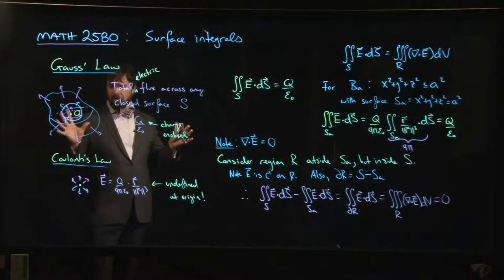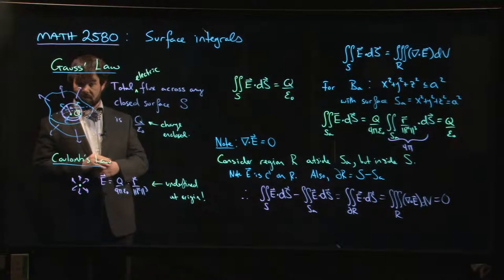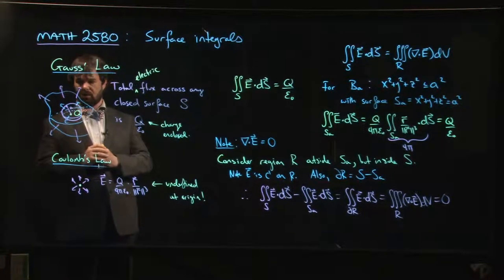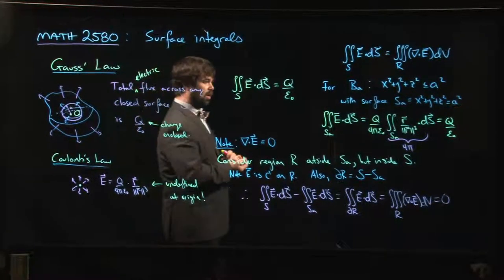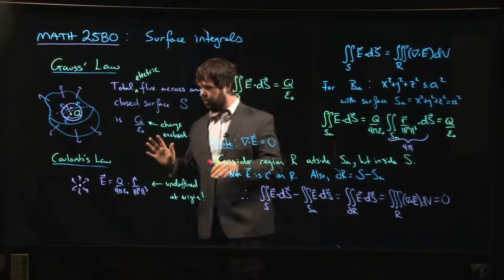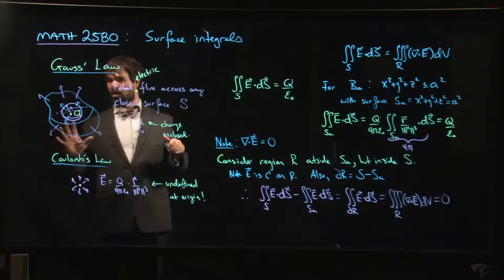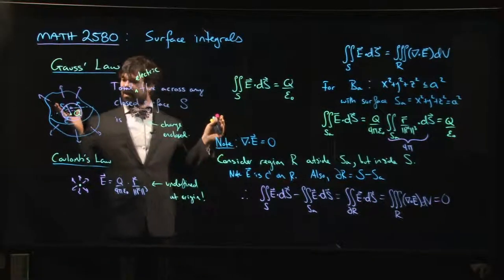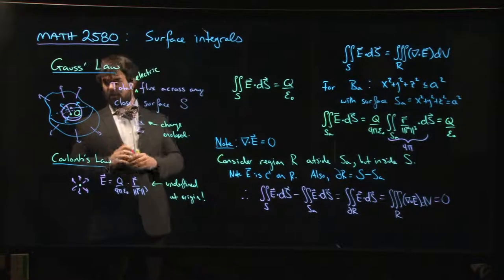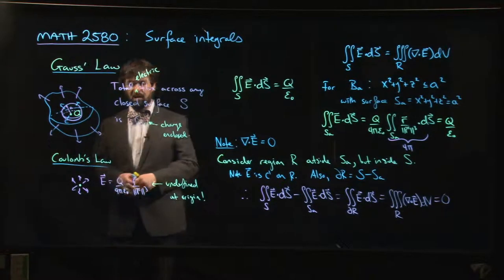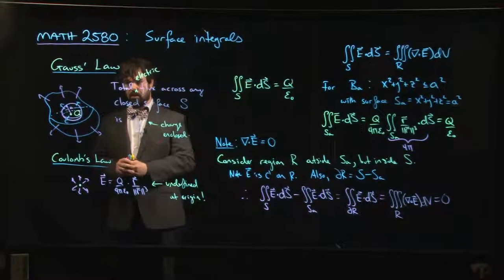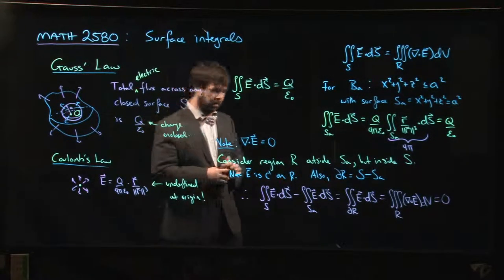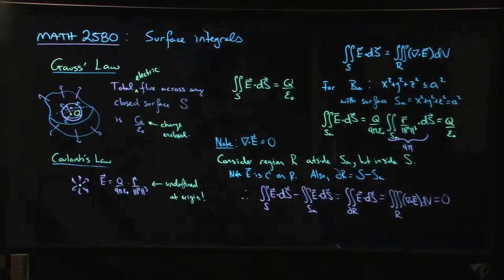The way you move from a point charge to a more general setup where you have some distribution of charge is more complicated. It's beyond what we want to do in this course, it's something you might do in a physics course. Essentially what you do is you assume that your electric field satisfies what's called a superposition principle. So you assume that your distribution of charge is made up of a whole bunch of point charges, like imagine electrons or something, and then you kind of wrap a little ball around every single point charge and you do the same trick and you add up the results. And you'll find that you get what you want in the end. But with the tools we have, at the very least, we can do Gauss's law for a point charge.